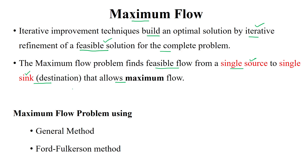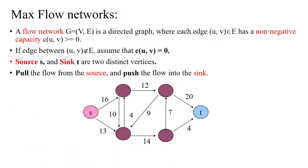This can be solved using a generalized method and the Ford-Fulkerson method. The network can be explained in the form of a graph called a flow network, which has a set of vertices and edges. It is represented using a directed graph where each edge is drawn between vertices u and v belonging to the set of edges. Edges should have non-negative capacity values, represented as c(u, v), which is always greater than or equal to 0. A capacity of 0 means there is no edge between two vertices u and v.